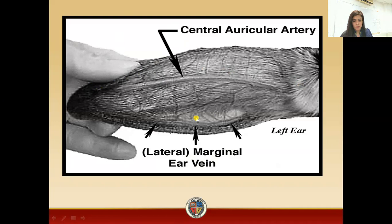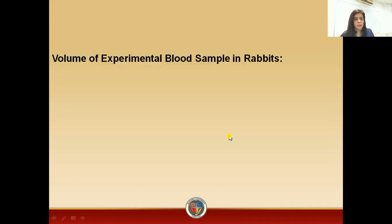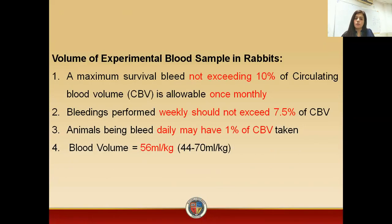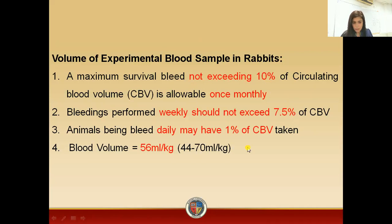This is the ear of a rabbit and this is the marginal ear vein, where you have to withdraw the blood. Now, how much volume of blood you can withdraw from the rabbit? Per month, you can withdraw blood not exceeding 10% of the CBV — that is the circulating blood volume of the rabbit. Weekly, you can withdraw not exceeding 7.5%, and daily you can withdraw blood that is only 1%.